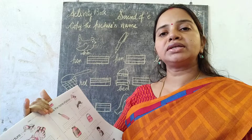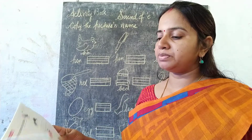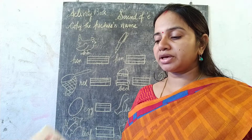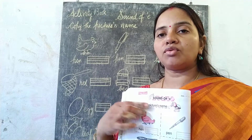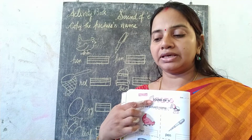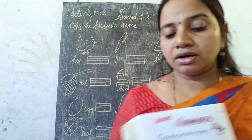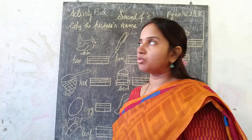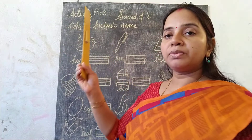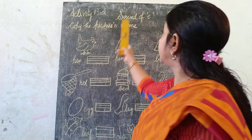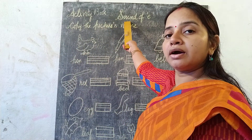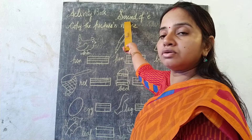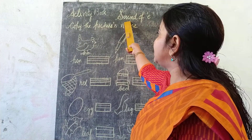What was common in these words? The letter A, which comes in all the previous words. Today, what do we do? Sound of E. We will see what our pronunciation is when we speak it.